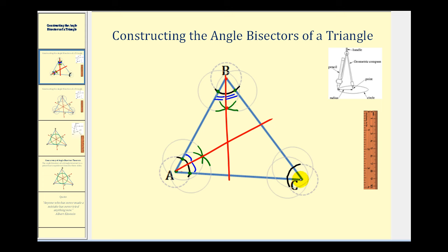We'll do this one more time at vertex C. We'll put the point of the compass here and swing an arc in the interior of the angle, then put the point of the compass at this point of intersection and do the same. Our angle bisector will begin at point C and pass through the intersection of these two arcs, giving us two smaller congruent angles.